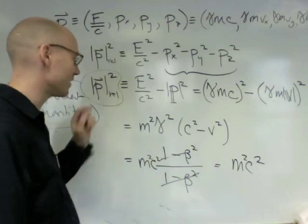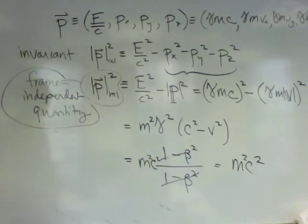and it produced something that doesn't depend on the speed of the object. It created an invariant, which is this frame-independent quantity related to the momentum.